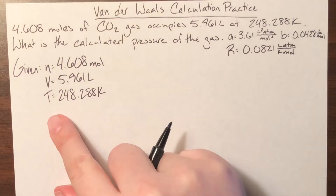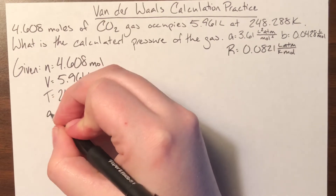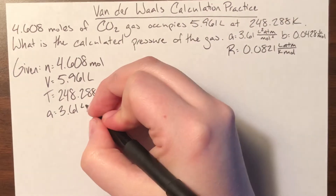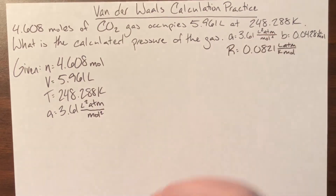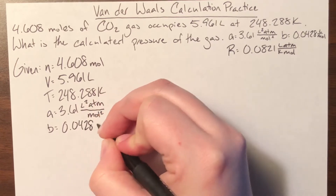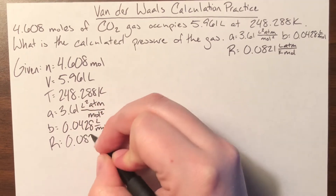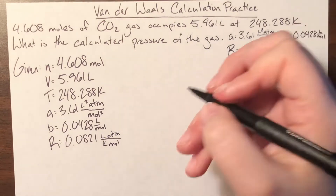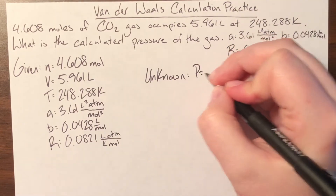What is the calculated pressure of the gas? I'm going to add the Van der Waals constants to my given list. A is equal to 3.61 liters squared atmospheres per moles squared, and B is 0.0428 liters per mole. My ideal gas law constant R is 0.0821 liter atmospheres per Kelvin mole. My unknown is the calculated pressure, so P is my unknown.